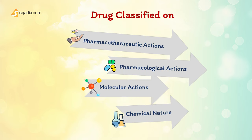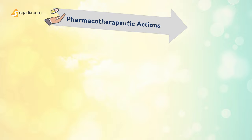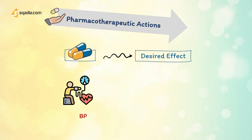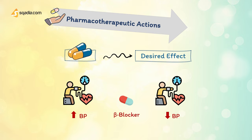Drugs are classified according to four properties. The first is pharmacotherapeutic actions, which is the desired effect produced by a drug. For example, there is a hypertensive patient who needs treatment. The doctor prescribes a beta blocker, which will alleviate his high blood pressure. The reduction in blood pressure is the effect which is required and can be achieved by taking the drug. This desired effect achieved by taking a drug is called the pharmacotherapeutic effect.